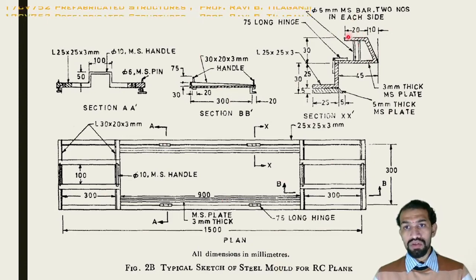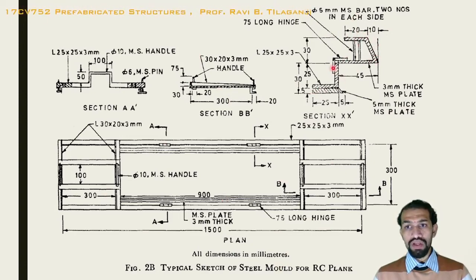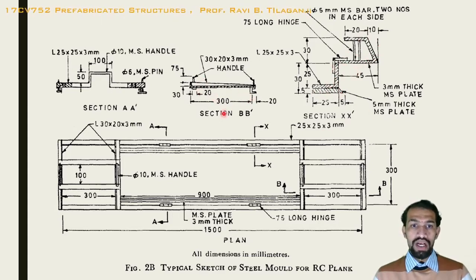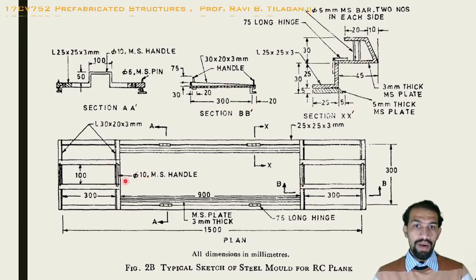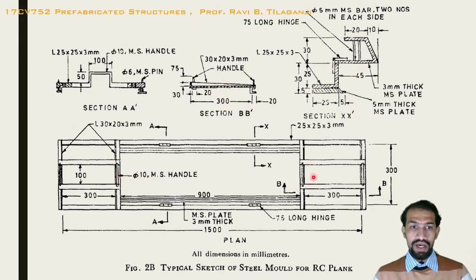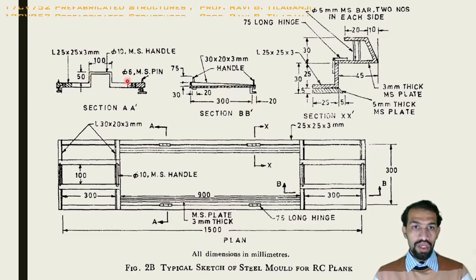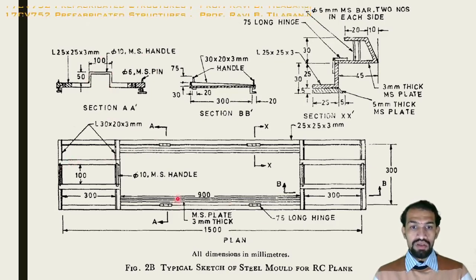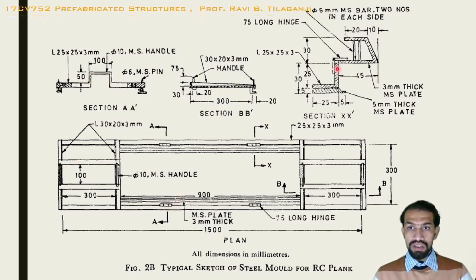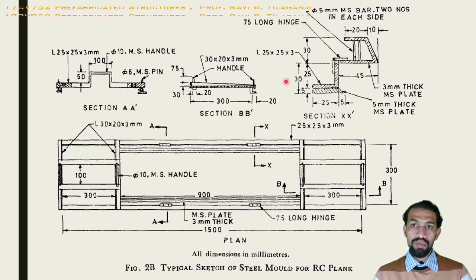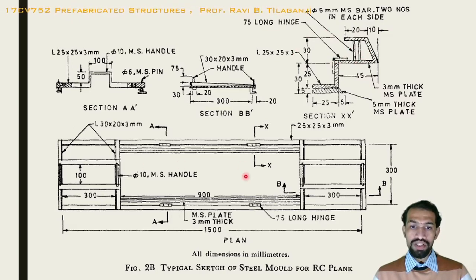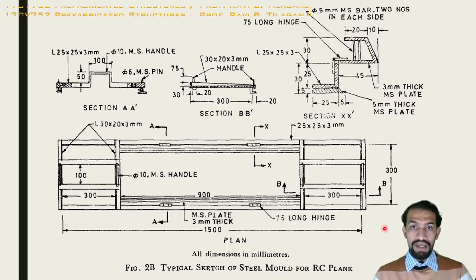This is the typical steel mould for RCC planks. It uses a 3 mm thickness MS plate jacket and a 5 mm thickness plate. MS 10 mm handles are provided at each end for easy lifting, and a groove-type handle is also provided. Hinges are provided so the mould can be easily rotated for removal — first opened, then closed for filling with concrete.